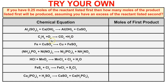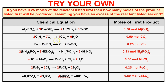Try some on your own — pause this video and work through the practice problems. Each asks you to start with 0.25 moles of the first listed reactant and find how many moles of the first listed product will be produced. The balanced chemical equations and answers are provided. If you got them all right, you're doing great at mole-to-mole stoichiometry. Subscribe to the channel using the button in the bottom right corner and leave any comments or questions below.